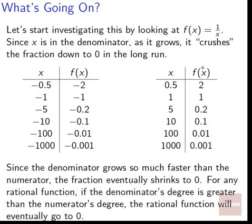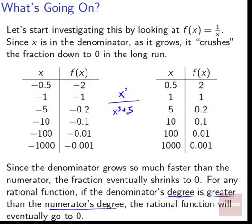Since the denominator grows so much faster than the numerator — the numerator isn't moving at all — the fraction will eventually shrink to 0. For any rational function, if the denominator's degree is greater than the numerator's degree, the denominator is able to grow faster, and the rational function will eventually go to 0. For example, x squared over x cubed plus 5 will get crushed down to 0, because x cubed plus 5 can outrun x squared in the long run.